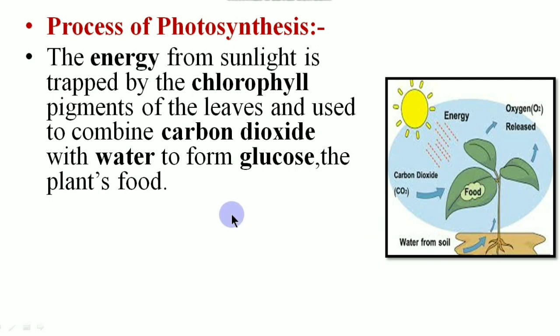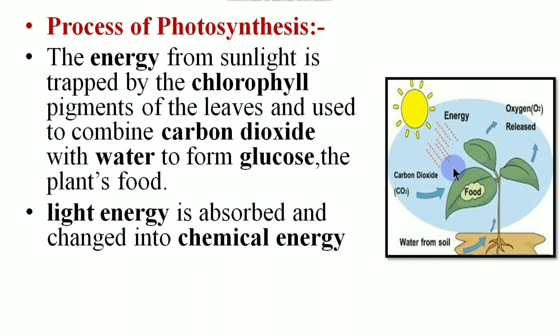And carbon dioxide combined with water to form glucose that is the food for the plants. In this process light energy is absorbed and changed into chemical energy. Light energy means it is the energy from the sun and the chemical energy is the food energy that is glucose.